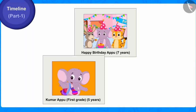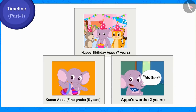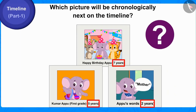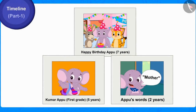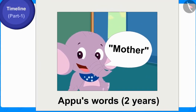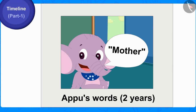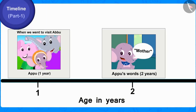Now, can you tell out of these pictures, the age of which picture will be chronologically next on the timeline? Well done children, you have found the correct answer. This picture, in which Appu was two years old, will be shown chronologically next on the timeline by writing two years on it.